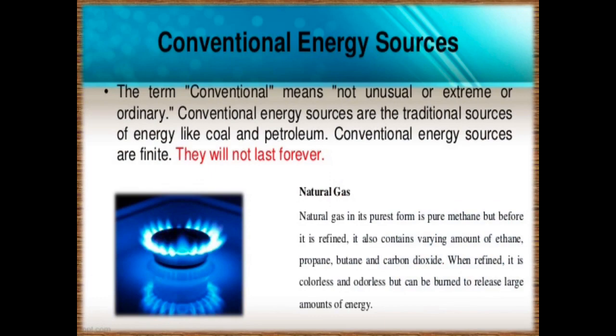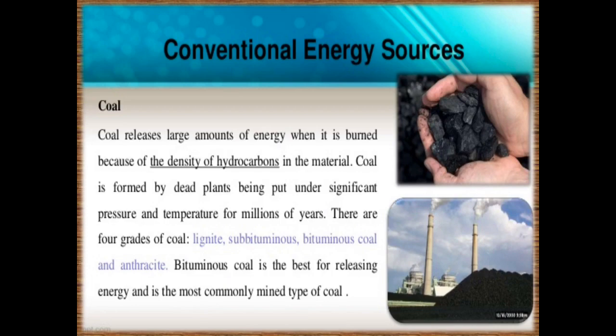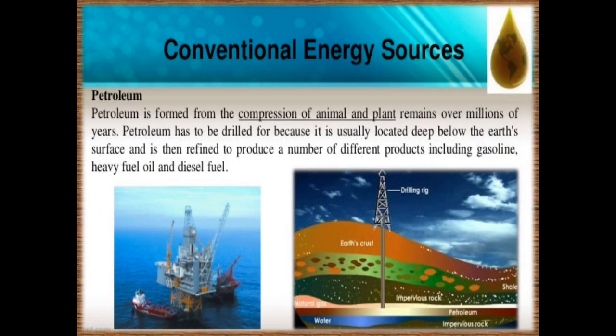Now here is about the conventional energy sources — about coal. What is coal? Coal is the most abundantly found fossil fuel. Coal occurs between the layers of sedimentary rock. The coal being used today was formed millions of years ago when huge ferns and swamps got buried under layers of the earth. Coal is best for releasing energy and is the most commonly mined type of fossil fuel.